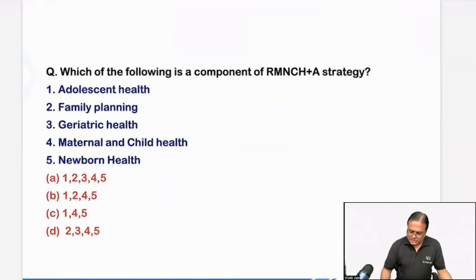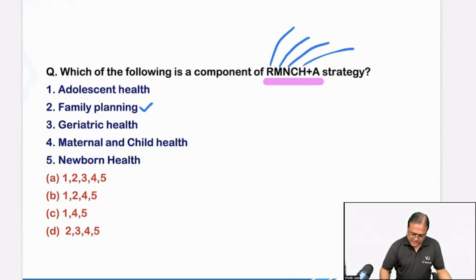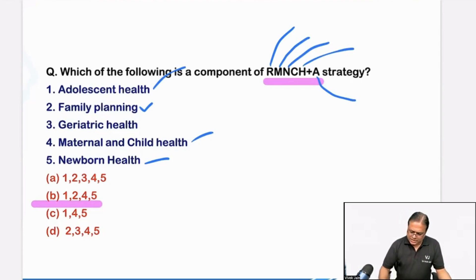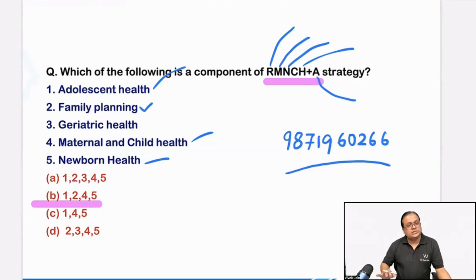Which of the following is not a component of RMNCH+A strategy? In mission classes we discussed this. So students who have attended the mission classes in detail, I'm sure they must be feeling happy today. So reproductive health includes family planning, maternal health, newborn health, child health — plus A is adolescent health. Depending on the choices, you will mark the answer. In case any choice is not matching, don't worry — please feel free to WhatsApp me the correct choice or the language of the question.